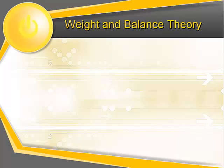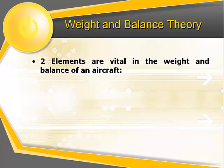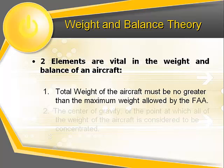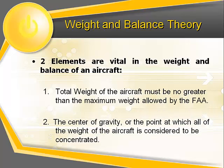Two elements are vital in the weight and balance considerations of an aircraft. First, the total weight of the aircraft must be no greater than the maximum weight allowed by the FAA for the particular make and model of the aircraft. Second, the center of gravity — the point at which all of the weight of the aircraft is considered to be concentrated — must be maintained within the allowable range for the operational weight of the aircraft.